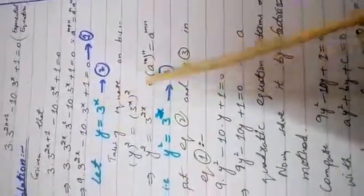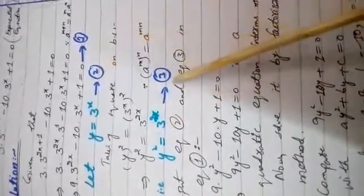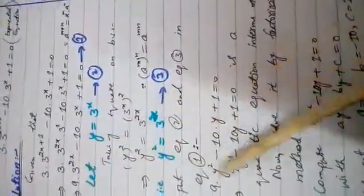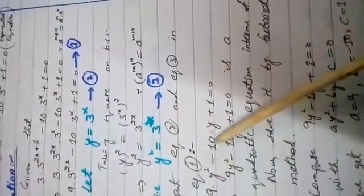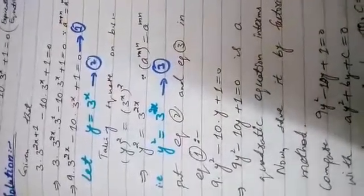That is y square equal to 3 power 2x. Ek hummare paas 3 power x wali term bhi hai. Ek ko naam denge equation 2 ka, ek ko naam denge equation 3 ka. Put equation 2 and equation 3 in equation 1. 9 into 3 power 2x ki jaga y square a jae ga. Minus 10, 3 power x ki jaga y a jae ga. Plus 1 equal to 0.